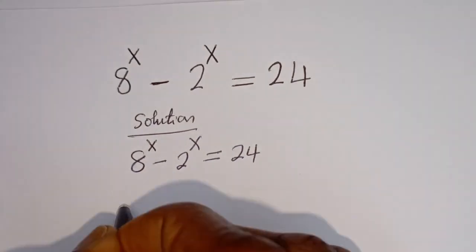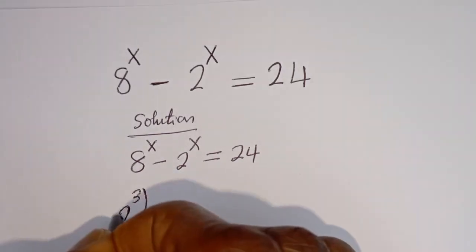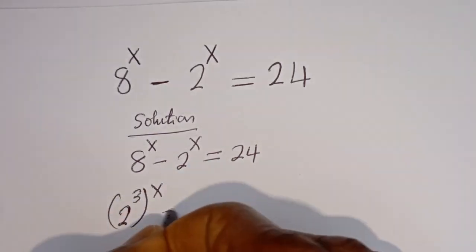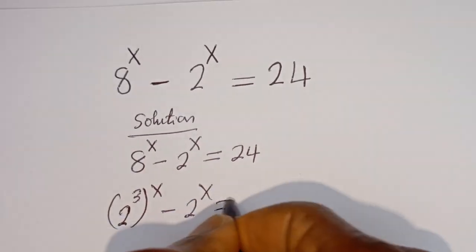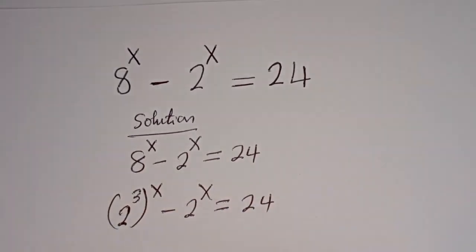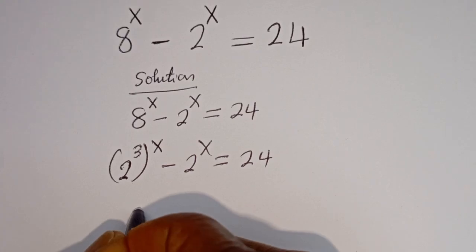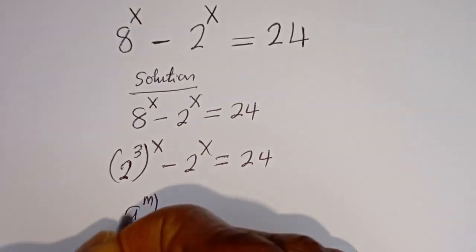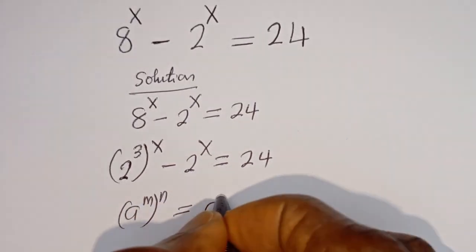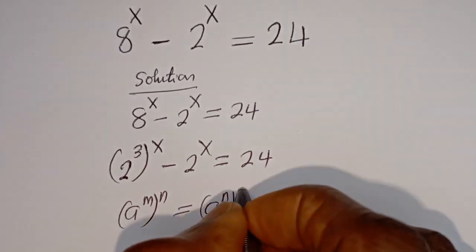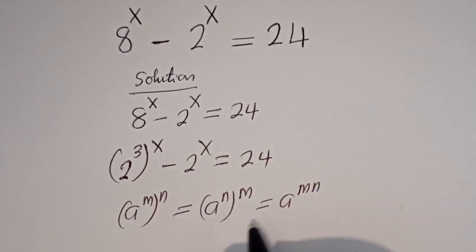Now 8 to the power of x can be written as 2 to the power of 3, to the power of x, minus 2 to the power of x is equal to 24. Take note that if you have a to the power of m to the power of n, this is equal to a to the power of n to the power of m, which is equal to a to the power of m times n.